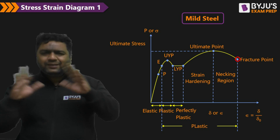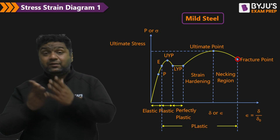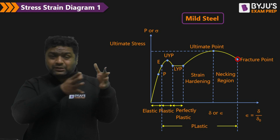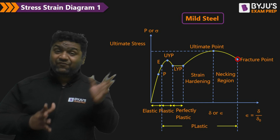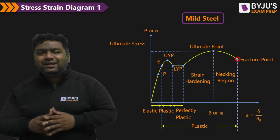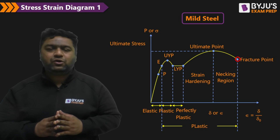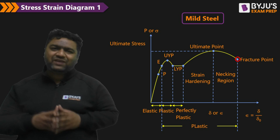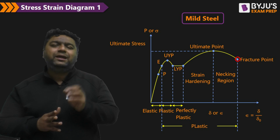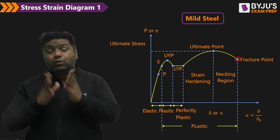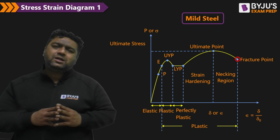Once the ultimate point is reached, fracture cannot be stopped. There are two terms: failure and fracture. Failure means plastic deformation has started; fracture means the body breaks into two parts. From yielding to ultimate, if you unload the material you can still avoid fracture. Plastic deformation starts when bonds begin breaking, but fracture does not occur before the ultimate point is crossed.